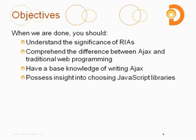So our objectives when we're all done with this class: you should be able to understand the significance of RIAs, comprehend the difference between Ajax and traditional web programming, have a pretty good base knowledge of writing simple Ajax, and also possess some insight into choosing a JavaScript library.